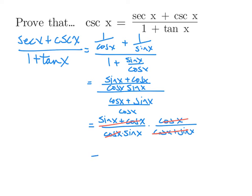So we're left with 1 over sine. The reciprocal of sine of x is cosecant of x, which is the other side of our identity.